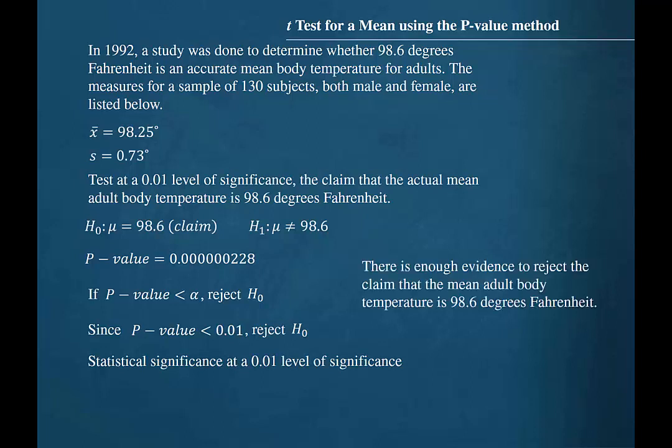But regardless whether the level of significance is 0.05 or 0.01, the conclusion is the same. We reject the null hypothesis, so there is enough evidence to reject the claim that the mean adult body temperature is 98.6 degrees Fahrenheit.